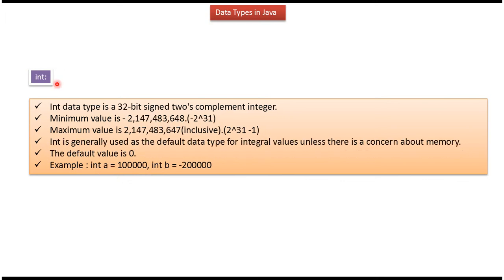Third data type is int. Int data type is a 32-bit signed two's complement integer. Here you can see the minimum value and the maximum value, and default value is zero. This is how we can declare int, and int is generally used as the default data type for integral values unless there is a concern about memory.